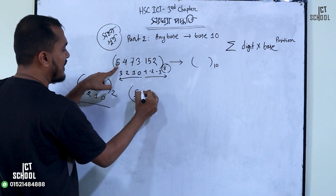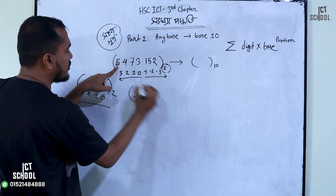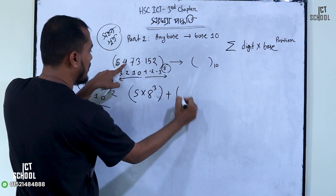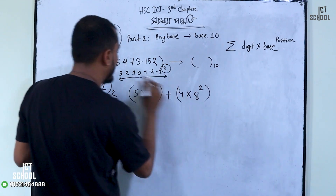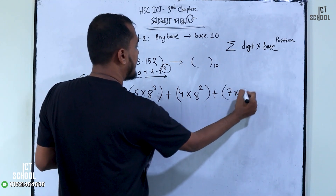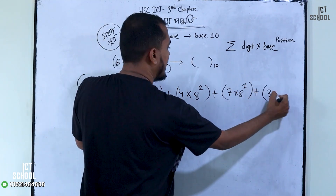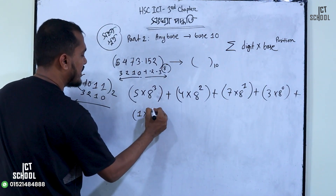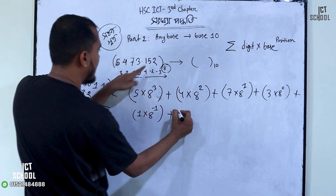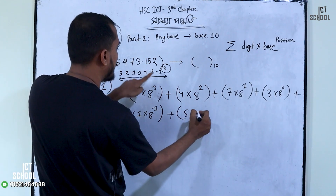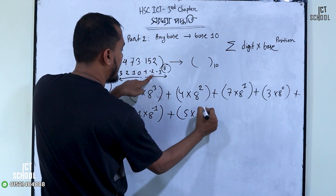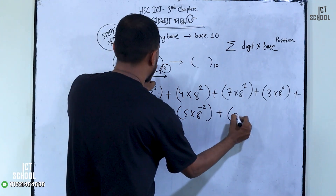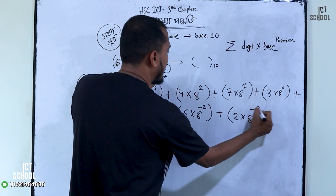The base is 8, and the position is 3. So you can write: plus 4 into 8 to the power 2, plus 7 into 8 to the power 1, plus 3 into 8 to the power 0, plus 1 into 8 to the power minus 1, plus 5 into 8 to the power minus 2, plus 2 into 8 to the power minus 3.